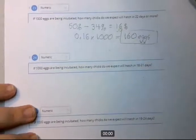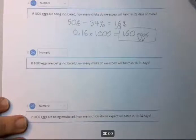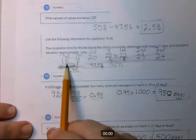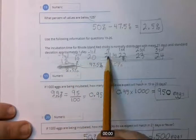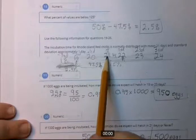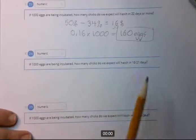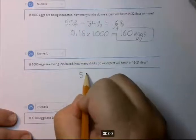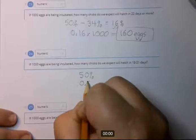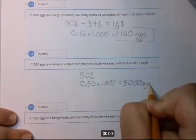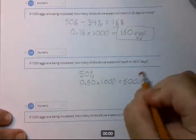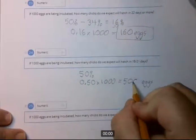If 1,000 eggs are being incubated, how many chicks do we expect to hatch in 18 to 21 days? 18 is three standard deviations to the left, and 21 is the mean. Half the values are to the left of the median, so that's 50% — 0.50 times 1,000 — equaling 500 eggs.